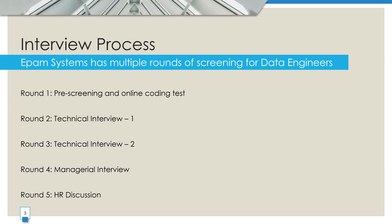Here is an important point — this is not an eliminatory round. Your score here won't decide whether you move forward or not. Instead, the results are shared with the technical interviewers who use them to understand your coding ability before the technical rounds. One more caution: do not try to cheat or use AI tools to complete the test. The system can detect this and even shows a cheating percentage to the recruiters and interviewers, which can damage your chances. So it's always best to be honest.